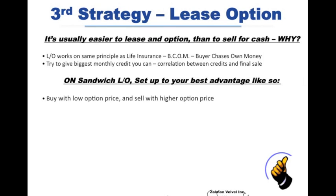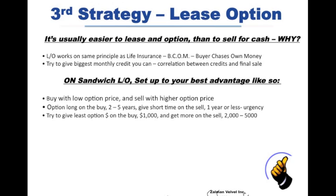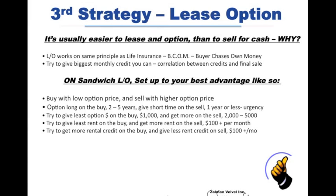On a sandwich lease option, you want to set it up to your best advantage. You want to buy it with a lower option price than you're selling it, so you make money on the difference between the two. You want to option it long — like two to five years — but sell it short on maybe a one-year term. Give the least amount of option money when you buy, say a thousand or a couple of thousand dollars, and try to get more money when you sell, like two to five or even ten thousand or more. Try to get the least rent when you buy and more rent when you sell, making at least $100 a month. Also try to get more rental credits when you buy compared to what you give away when you sell, and try to buy it with the previous owner making all the repairs so you get it in tip-top shape, then sell it to the new buyer who makes all the repairs before he closes.